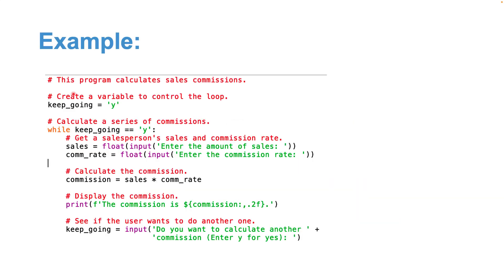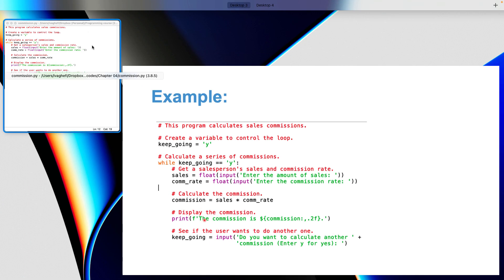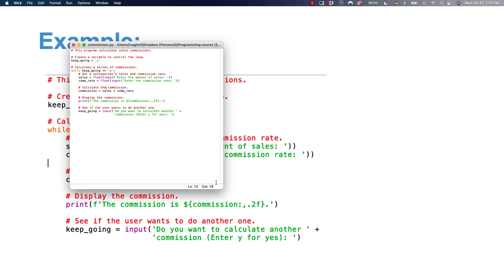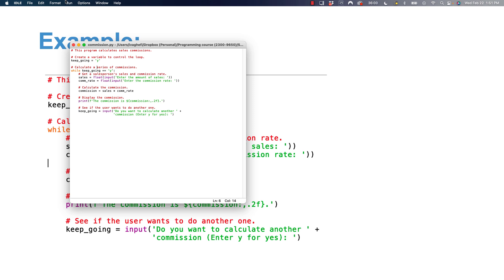Here is what the code looks like: we set keep_going equal to 'y', then we say while keep_going is literally equal to 'y', do these steps. At the end we ask for input — do they want to calculate another commission? If they enter 'y' it will repeat the process. Let me run this quickly in IDLE.